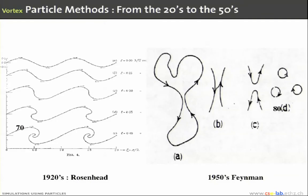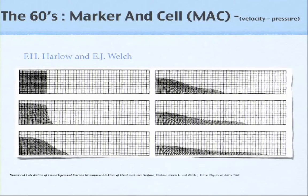Let's look a little at the history of particle methods, because it's educational. Going back to the 1920s, the first simulations in fluid dynamics were done with vortex particles — vortex blobs. The simulations were done by hand. There was work on vortex filaments, or line particles, where people were looking into the process of reconnection.